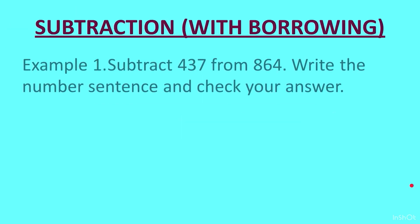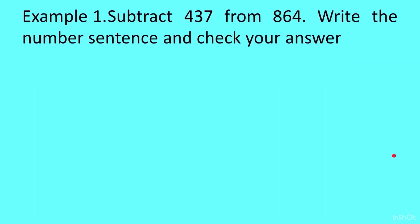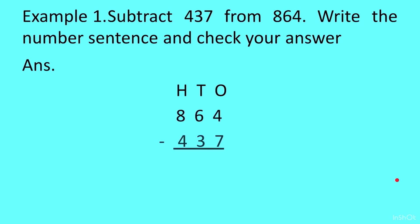Let us take an example: subtract 437 from 864. Write the number sentence and check your answer. For this question we will write 864 on top because from this number we have to subtract 437. We write the bigger number on top, so we write the place values, then 864, and minus 437 below it.